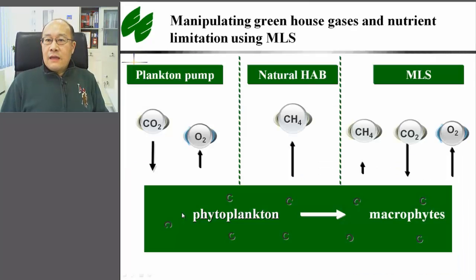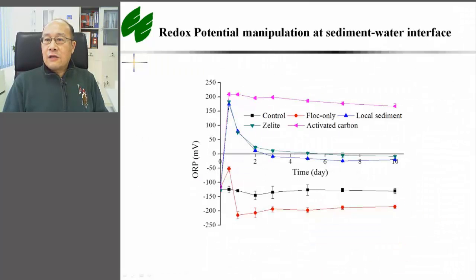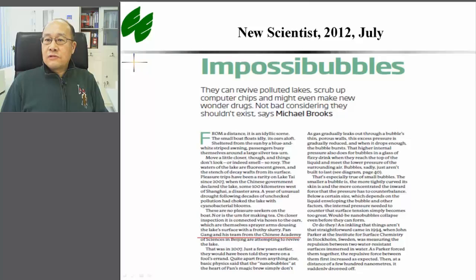In natural HAB systems, anaerobic degradation of algae cells may result in greenhouse gas emissions such as methane. If algae are used to feed the growth of submerged vegetation using MLS technology, methane release may be reduced. Preliminary measurements indicated that both CH₄ and CO₂ fluxes across water-air interfaces can be reduced by oxygen nanobubble-modified local soil capping treatment. This may be related to the fact that redox potential in the sediment can be significantly manipulated by oxygen nanobubbles, which may greatly affect microbial processes in the sediment. For general information about nanobubbles, one can refer to a New Scientist article where this nanobubble work is featured.